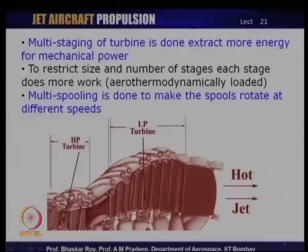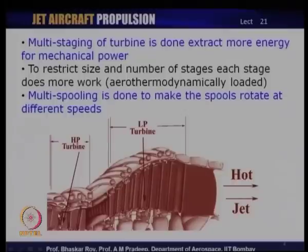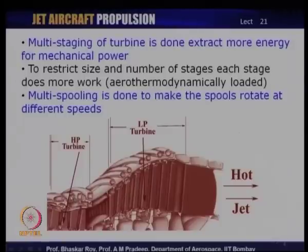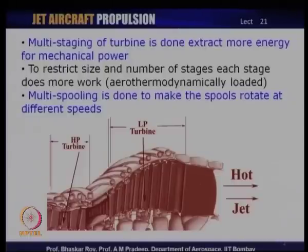Looking at a multi-stage turbine, we have an HP turbine and then a set of LP turbines. The HP turbine here has two stages — stator-rotor and then stator-rotor. A typical turbine stage is made up of a stator and a rotor. We see two stages of HP turbine and then something like four stages of LP turbine. Such an LP turbine in an aircraft engine would typically be designed to operate at a different RPM — substantially lower than that of the HP turbine.